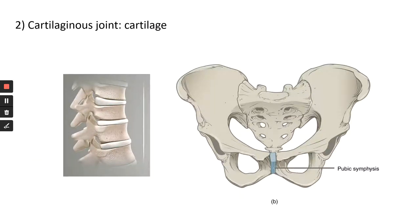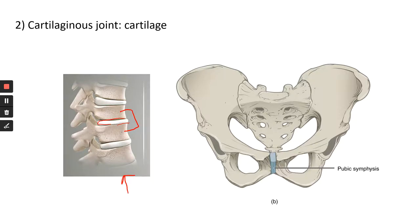The second type is the cartilaginous joint, where bones are held together by cartilage — specifically fibrocartilage, a type of very tough cartilage. You can find cartilaginous joints in your spine or vertebral column: in between the vertebrae, there is a disc of fibrocartilage that is very resistant to compression, a very good structure to have in your vertebral column.